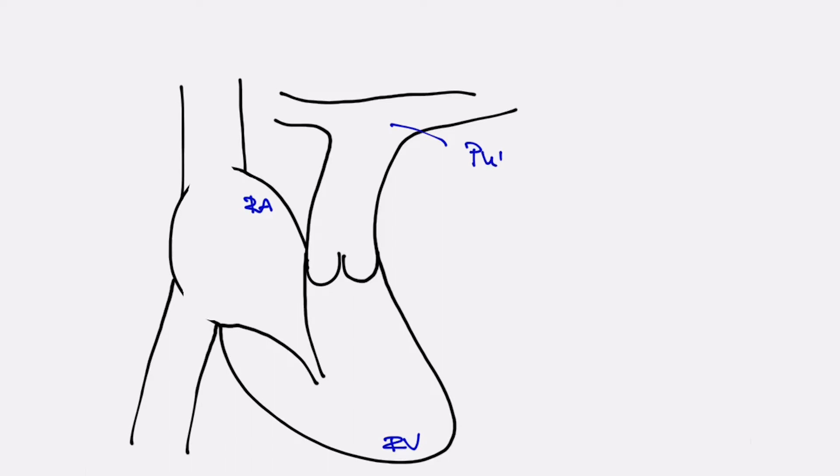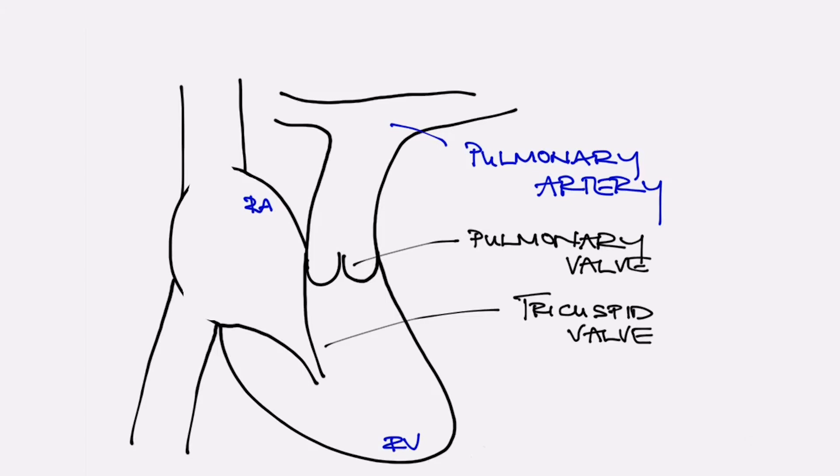We have the top chamber on the right called the right atrium, the bottom chamber on the right called the right ventricle, and then blood is pumped from the right ventricle to the artery that sends blood to the lungs called the pulmonary artery. The two valves on the right side are called tricuspid and pulmonary valve. All valves have names so that when healthcare providers speak with each other about a particular patient problem, we know exactly what that person is talking about.